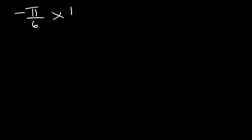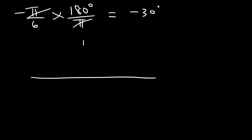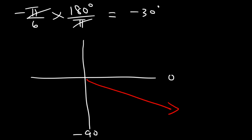For negative π over 6, convert to degrees: 180 divided by 6 is 30, so this is negative 30 degrees. Since 0 is the positive x-axis and negative 90 is straight down, negative 30 degrees falls in quadrant 4. So this is how you graph negative π over 6.